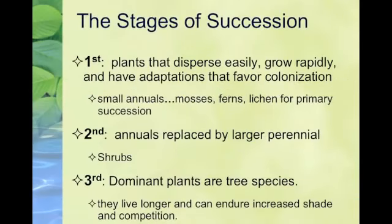The stages of succession are the same for both types except for the first stage. The first stage is when everything gets colonized — plants that can grow really fast and easily in various types of weather. Those are the ones that colonize, usually your small annuals, the mosses and ferns. For primary succession you need lichen because lichen can break down rock. A tree won't grow on a rock since it doesn't have place for its roots, so lichen breaks down the rocks so other things can come in and grow.